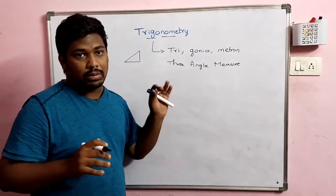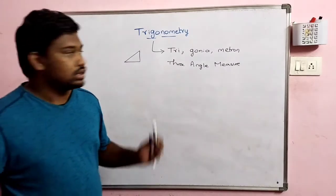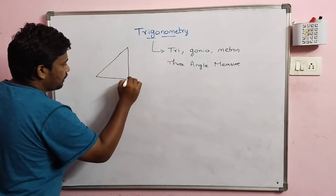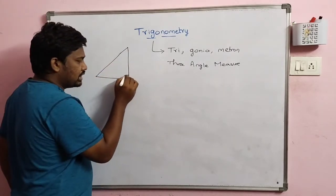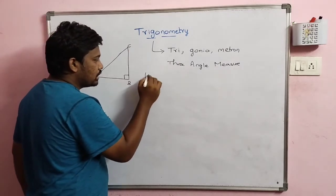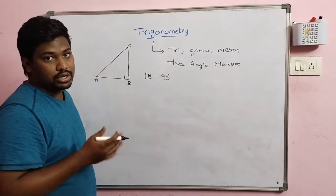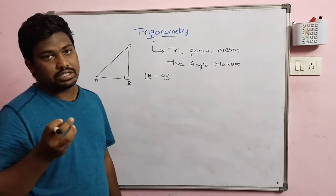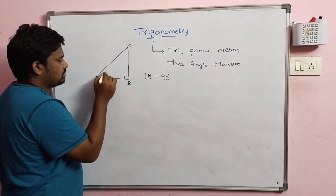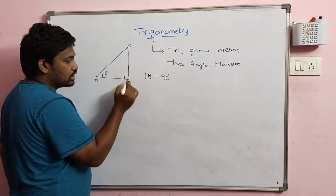Especially a right angle triangle — trigonometry is most probably involved with right angle triangles. Let us take a right angle triangle for basic practice. One of the angles, say angle B, represents 90 degrees — that is the perpendicular, the right angle. Let the other angle be theta.